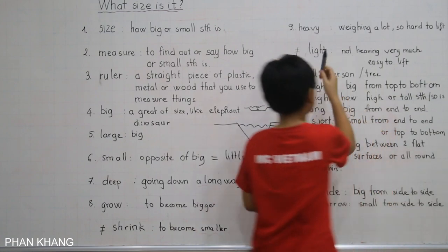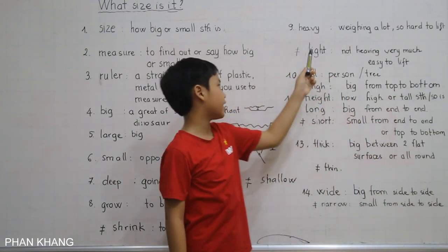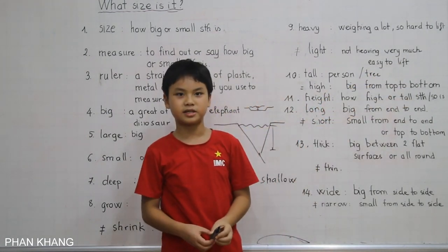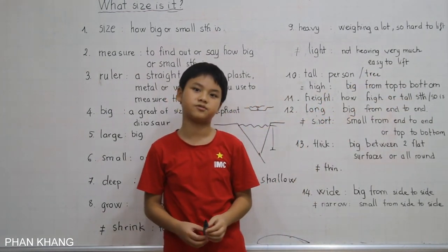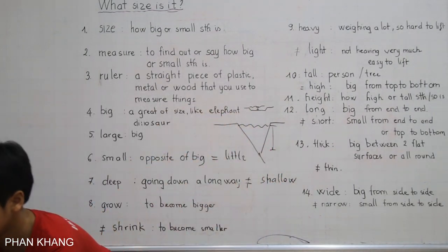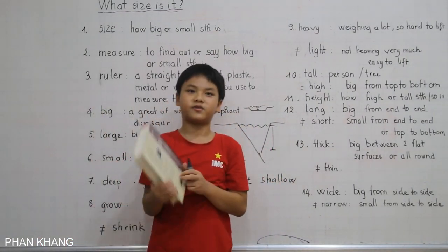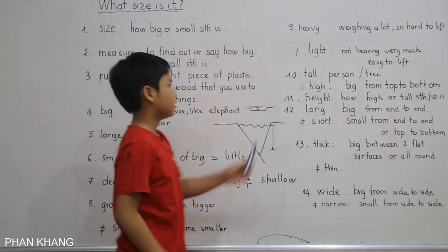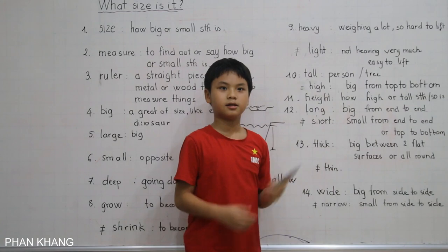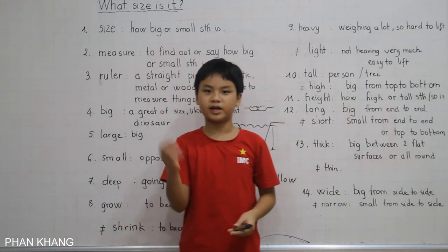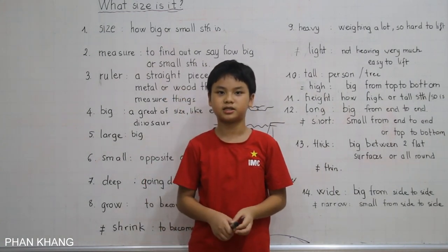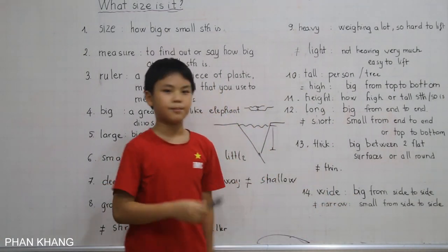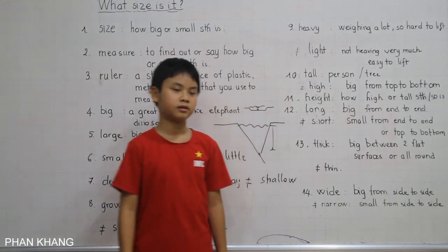Next is heavy. Heavy means weighing a lot — so hard to lift. We might say an elephant is very heavy, a table is very heavy, or even this book is very heavy. The opposite of heavy is light. A feather, a paper — something that does not require much effort to lift — we call that light. A paper is very light.